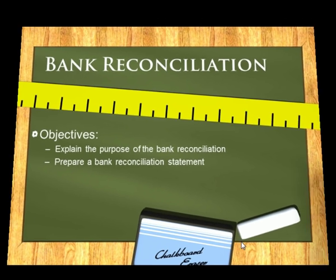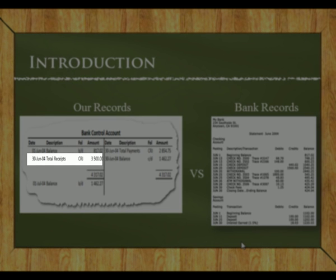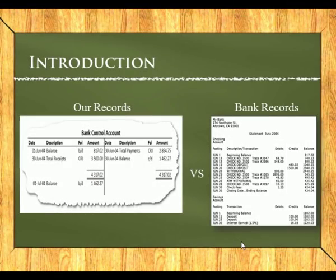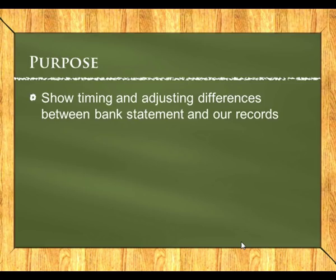The whole purpose of a bank recon starts from the fact that we want to be able to compare our records to the records of the bank — our bank control account in the general ledger versus our bank statement. The major difference between how the bank views our money and how we view our money is: all our receipts which appear on the debit side would appear as credits on their side, because to the bank they think they owe us that money, but to us it's an asset. And all our payments which appear on the credit side on our bank control would appear as debits on the bank statement. So the purpose of the bank reconciliation is to show the timing and adjusting differences between the bank statement and our records.